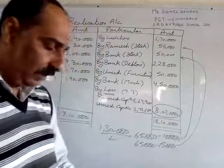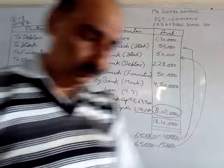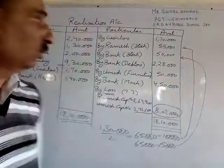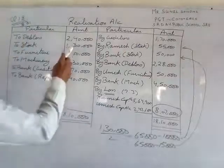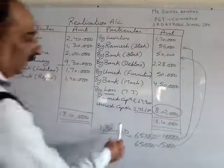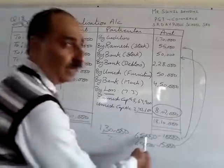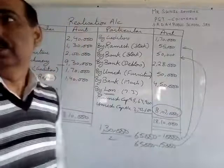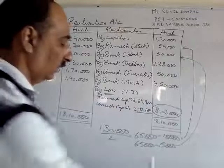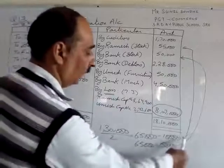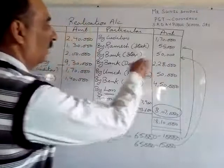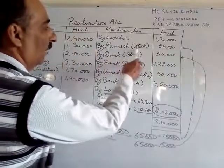Ramesh took over 50% stock at 10,000 less than the book value. Stock ki value 1,30,000 hai. 50% yaane half banta hai 65,000 rupees. 65,000 mein se 10,000 less kiya to 55,000 ki entry aayegi — by Ramesh (stock) 55,000 rupees.